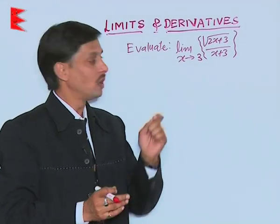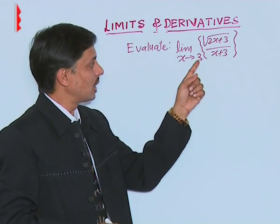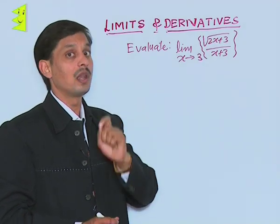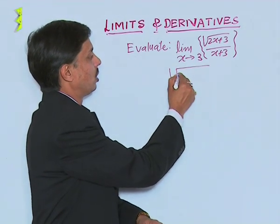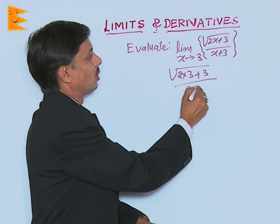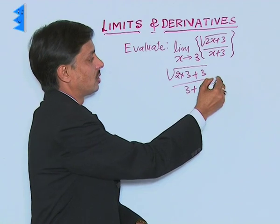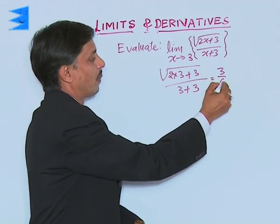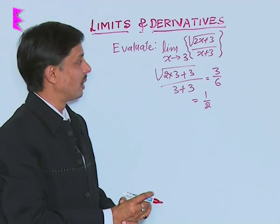The very first step we supply the value of variable same as where limit tends. So we have to write 2 into 3 plus 3 upon 3 plus 3. This becomes 6 plus 3, 9, its square root is 3 upon 6, this becomes half, 1 by 2.